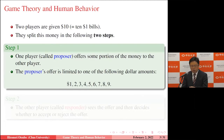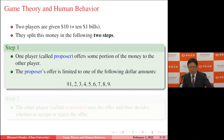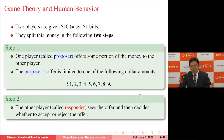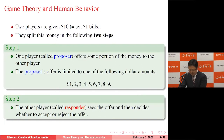Please think about the following situation. There are two players given $10 in $1 bills, and they split this money in two steps. Step one: one player, called the proposer, offers some portion of the money to the other player. The proposer's offer must be one of the following dollar amounts — $1, $2, $3, $4, and up to $9 — nine possible choices. Step two: the other player, called the responder, sees the offer and decides whether to accept or reject.